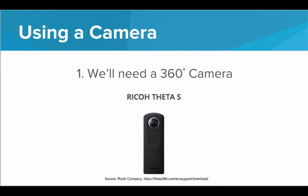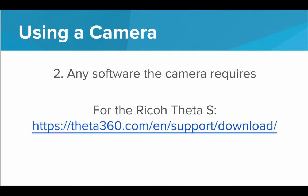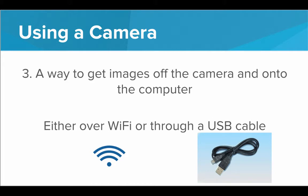If you're using a camera, the first thing you'll need is a 360 degree camera. The camera used in this video is the Ricoh Theta S, but there are a lot of options. Second, you'll need any software that the camera requires — for the Ricoh Theta S, I had to download a viewing app. Depending on your camera, just Google it and download whatever you need. Third, you'll need a way to get images off the camera and onto the computer, either over Wi-Fi or through a USB cable.